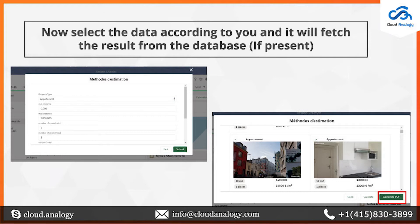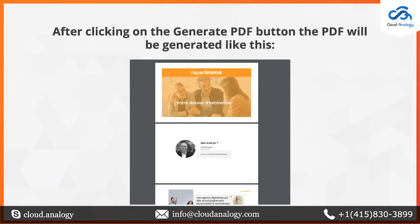We provided two buttons: the Generate PDF button and the Validate button. The Validate button creates the record but does not generate the PDF. After selecting the properties, hit the Generate PDF button and the PDF will open in a new tab.